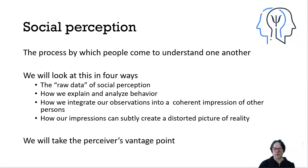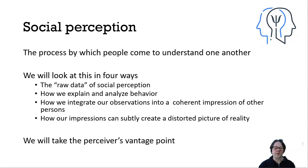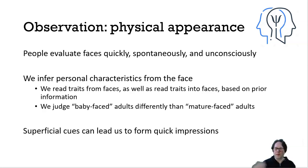In this chapter, we'll look at four ways in which social perception happens. We'll take a look at the raw data of social perception, how we explain and analyze people's behaviors, how we integrate our observations into a coherent impression of another person, the mechanisms involved in forming an impression of others, and how our impressions can subtly create a distorted picture of reality. We'll essentially be taking the perceiver's vantage point.